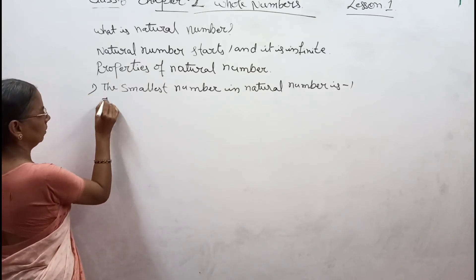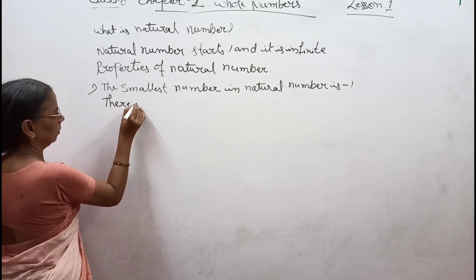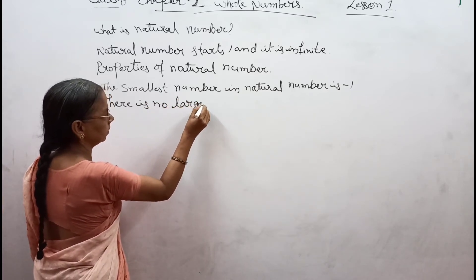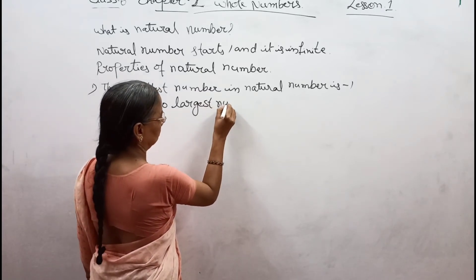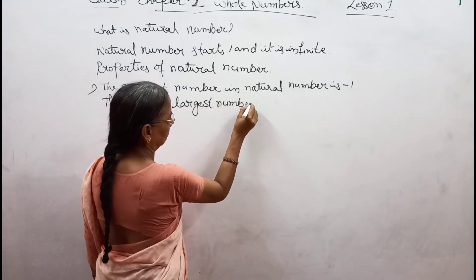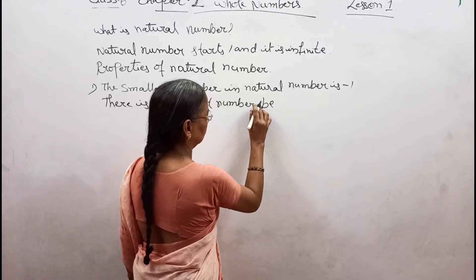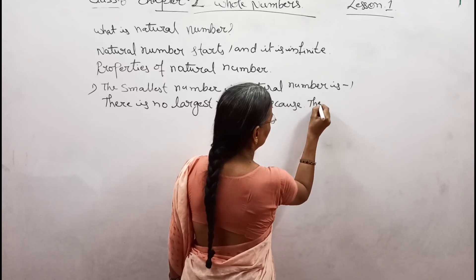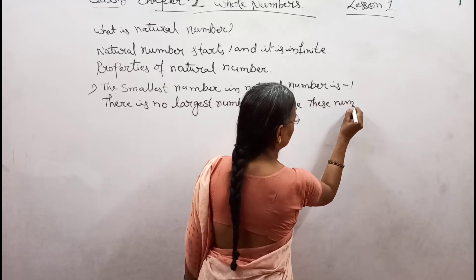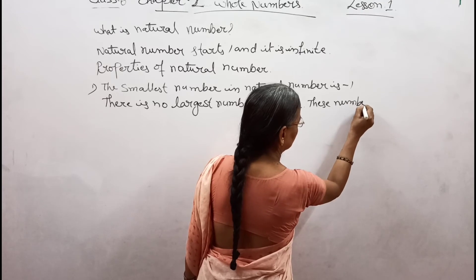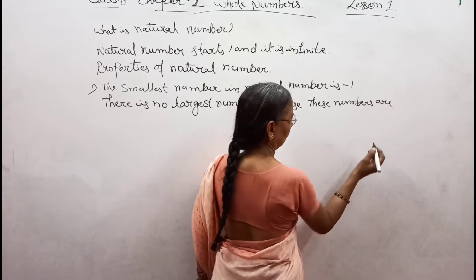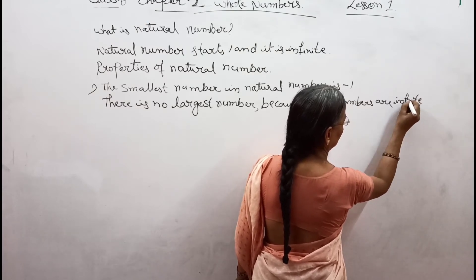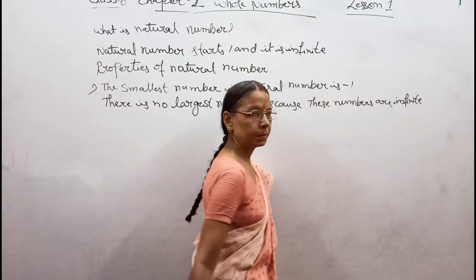The second property: there is no largest number, because these numbers are infinite.